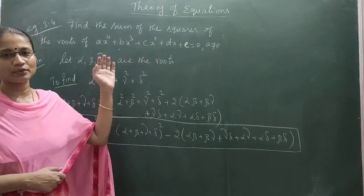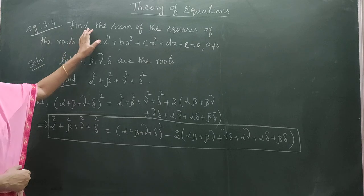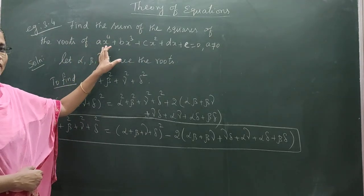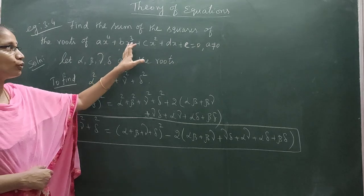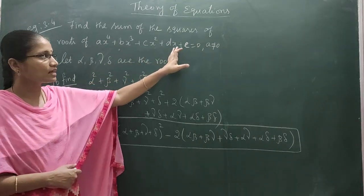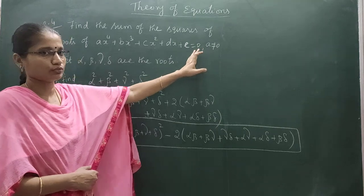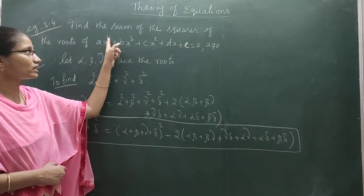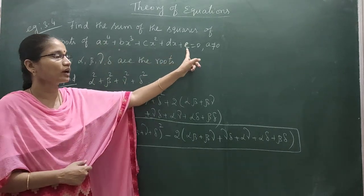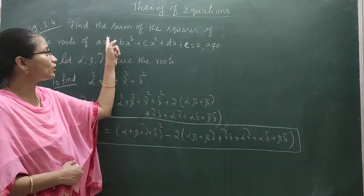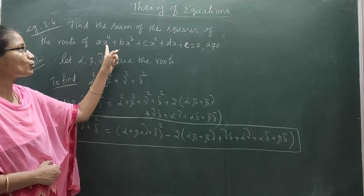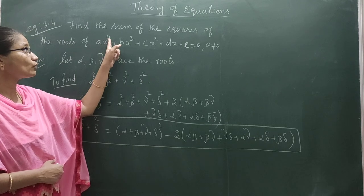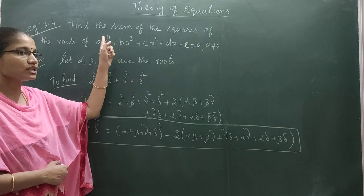Let us see example 3.4: Find the sum of the squares of the roots of Ax⁴ + Bx³ + Cx² + Dx + E = 0. This is the general form of a polynomial equation of degree 4. Since the degree is 4, it has 4 roots, and we have to find the sum of the squares of those 4 roots.